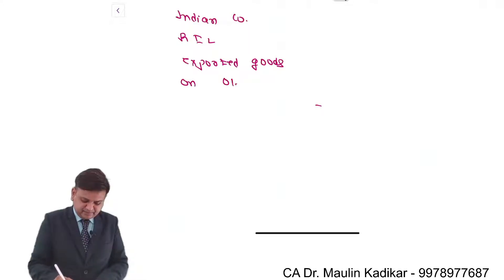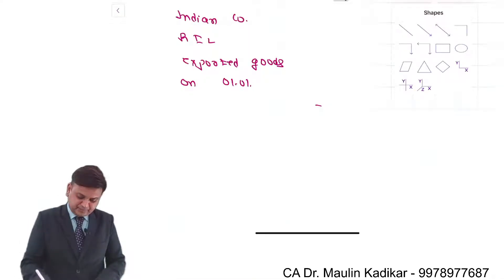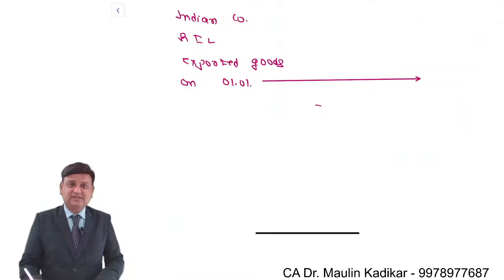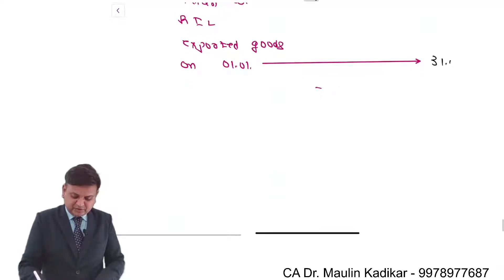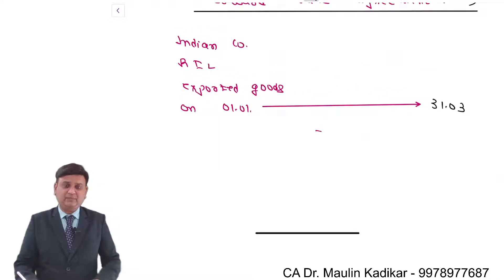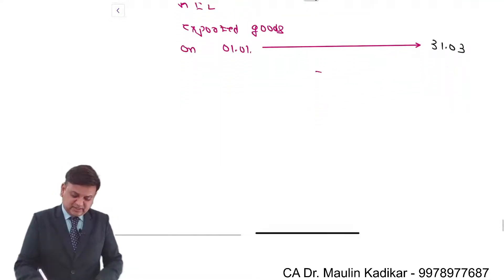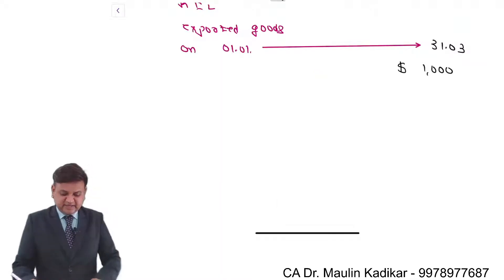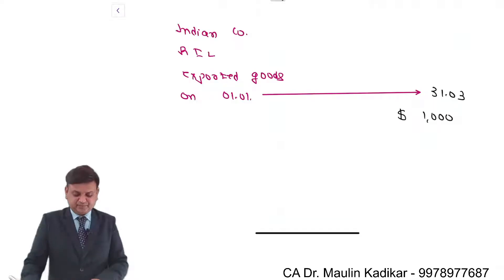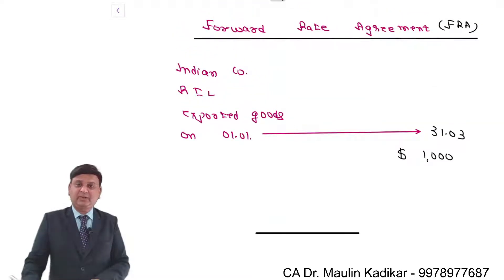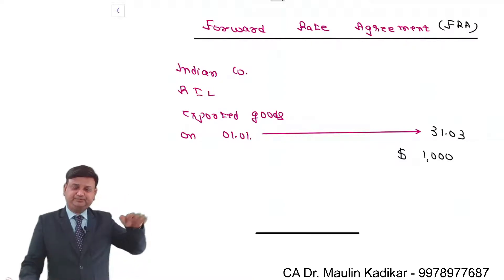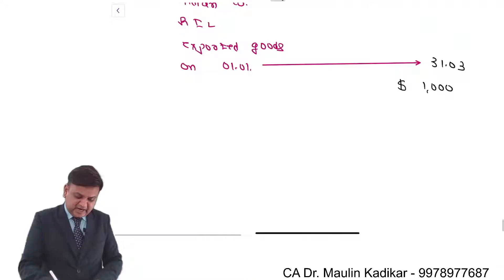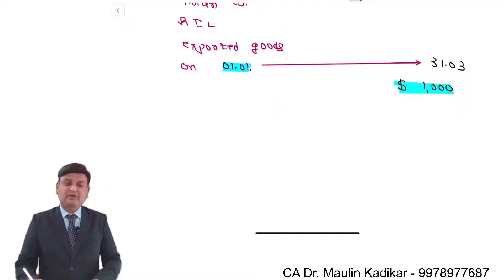On 1st of January, on export of the goods, this company is going to receive consideration after 3 months, on 31st of March. The consideration is going to be received in dollar currency — Reliance company is going to receive an amount of $1,000 after 3 months. We know that the exchange rate between rupee and dollar keeps fluctuating, so whatever the value of that consideration in rupee currency, there is an uncertainty.